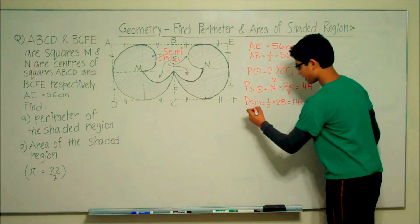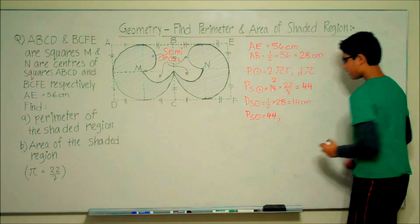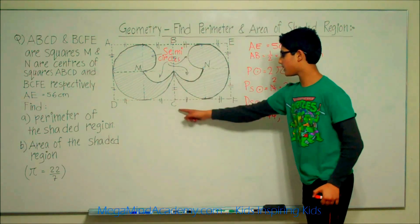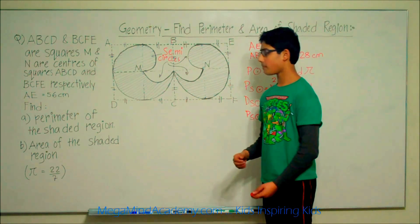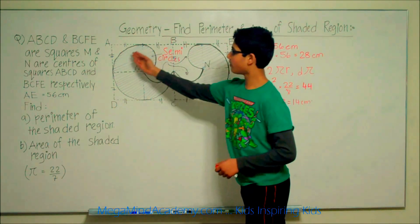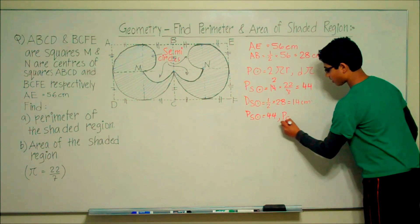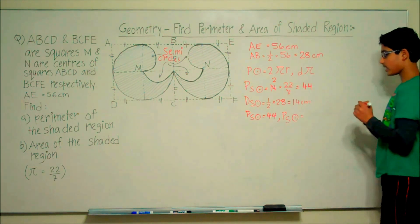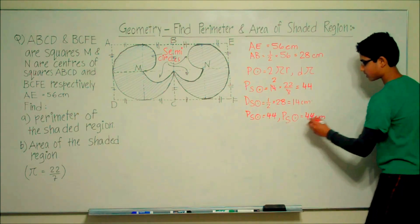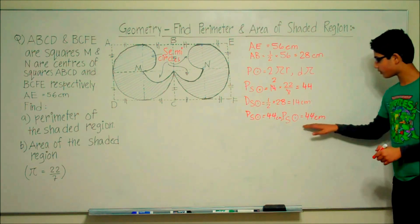The perimeter of the small circle is equal to 44 centimeters. Since squares ABCD and BCFE are exact replicas of each other, the shaded portion in one square is the exact replica of the shaded portion in the other. So the perimeter of the small circle on the other shaded portion is also equal to 44 centimeters.